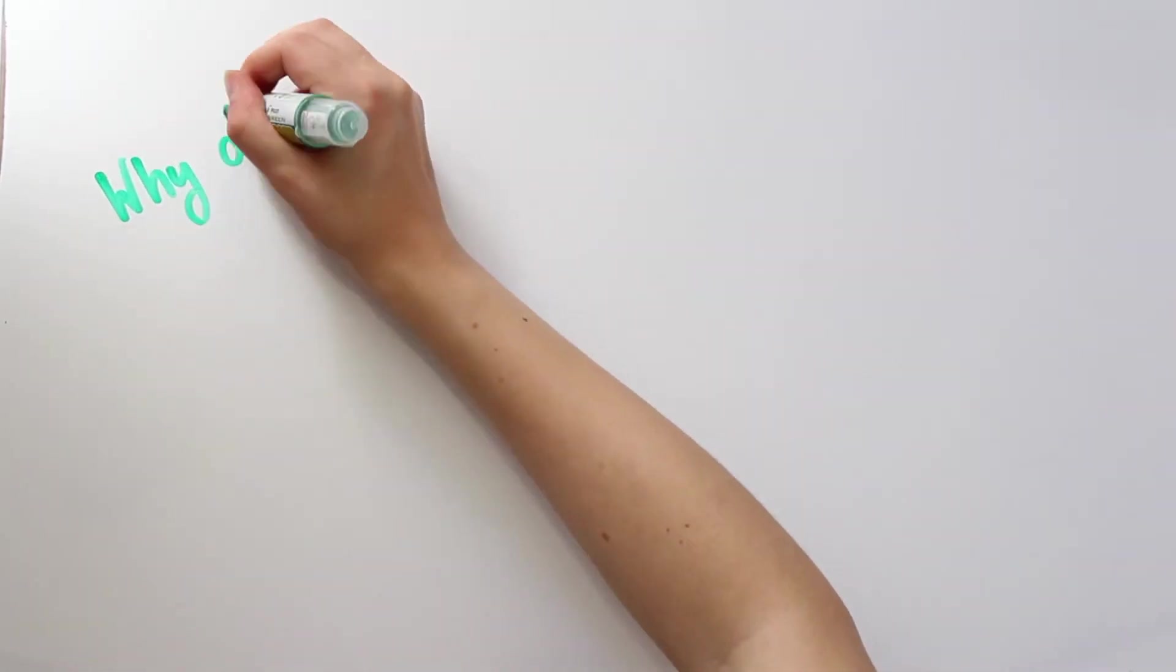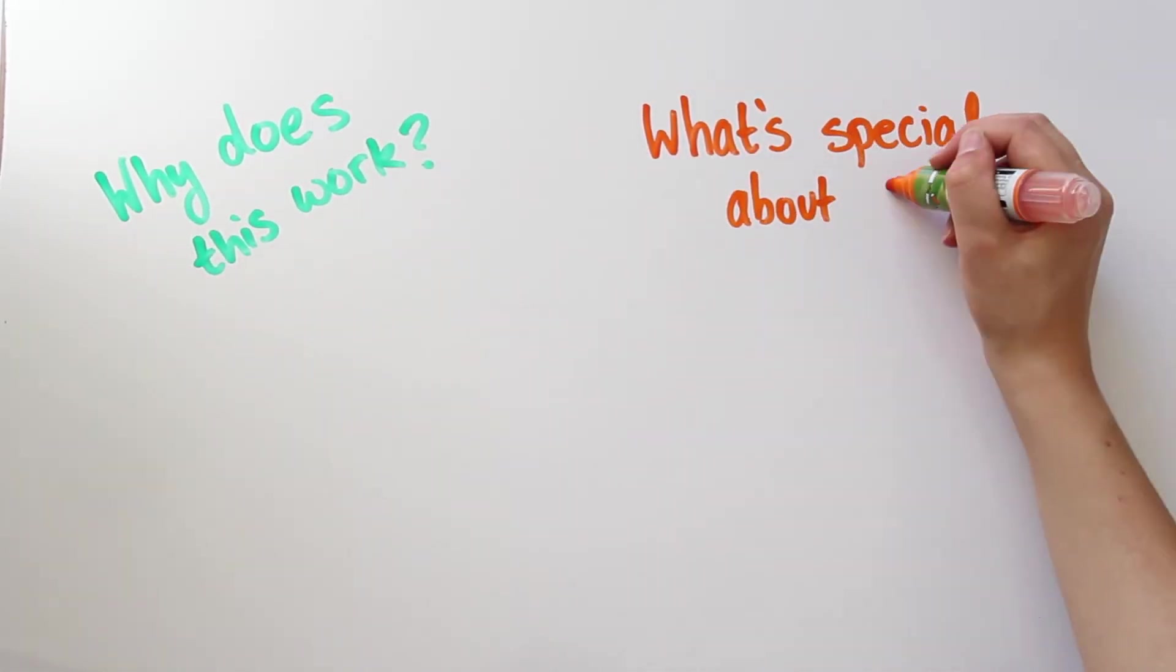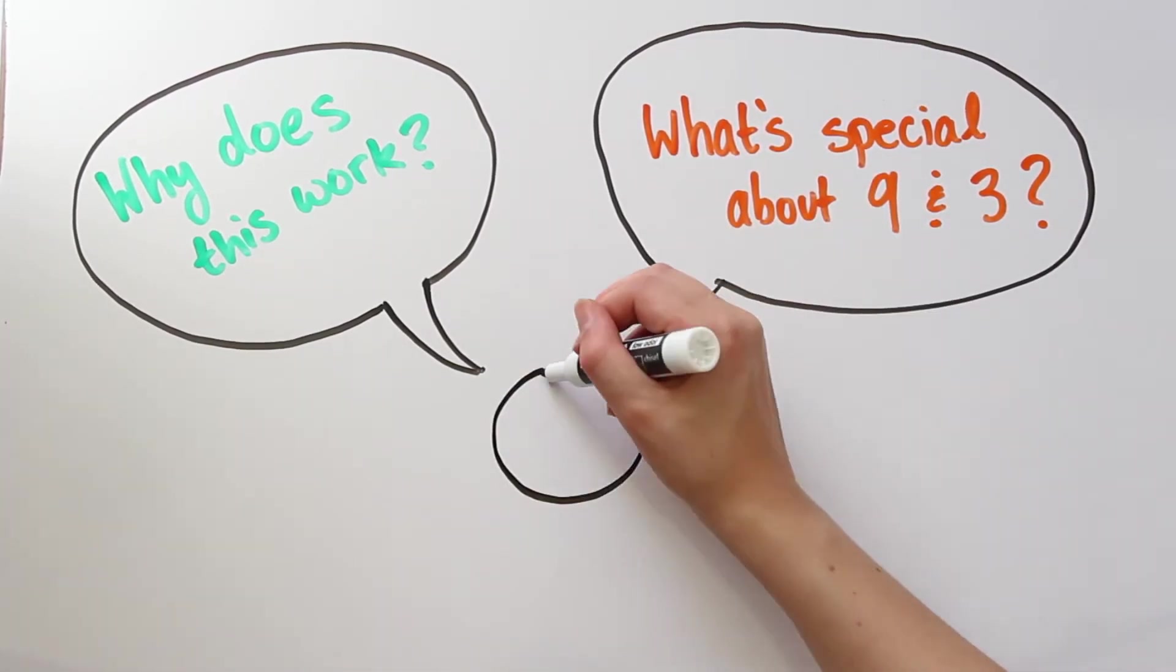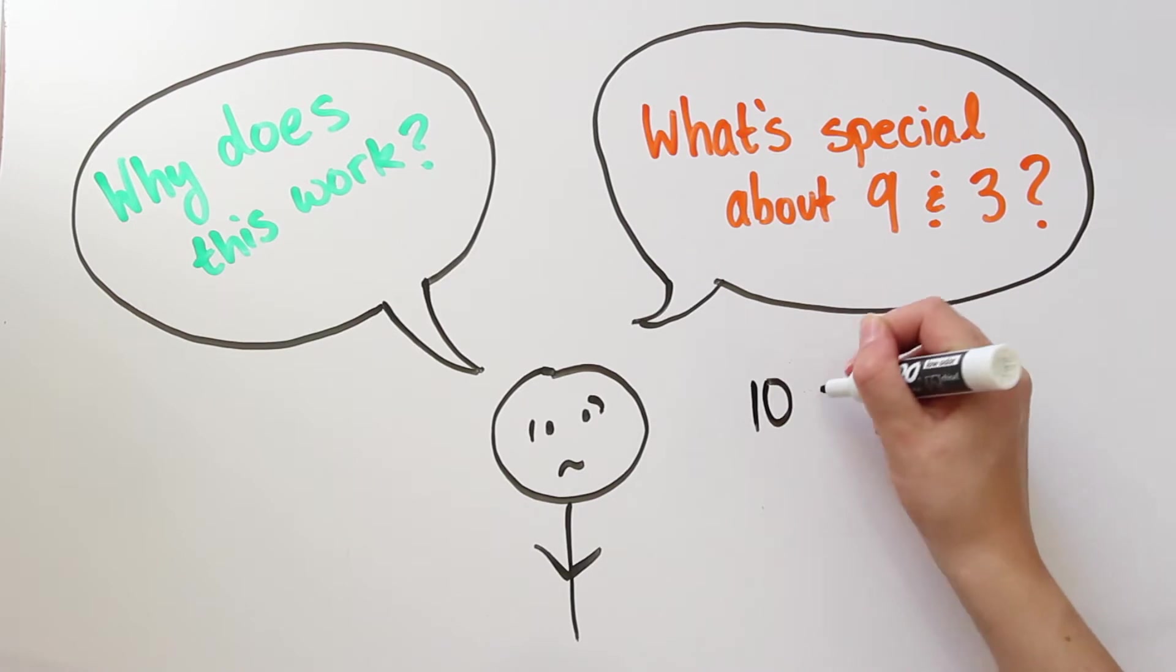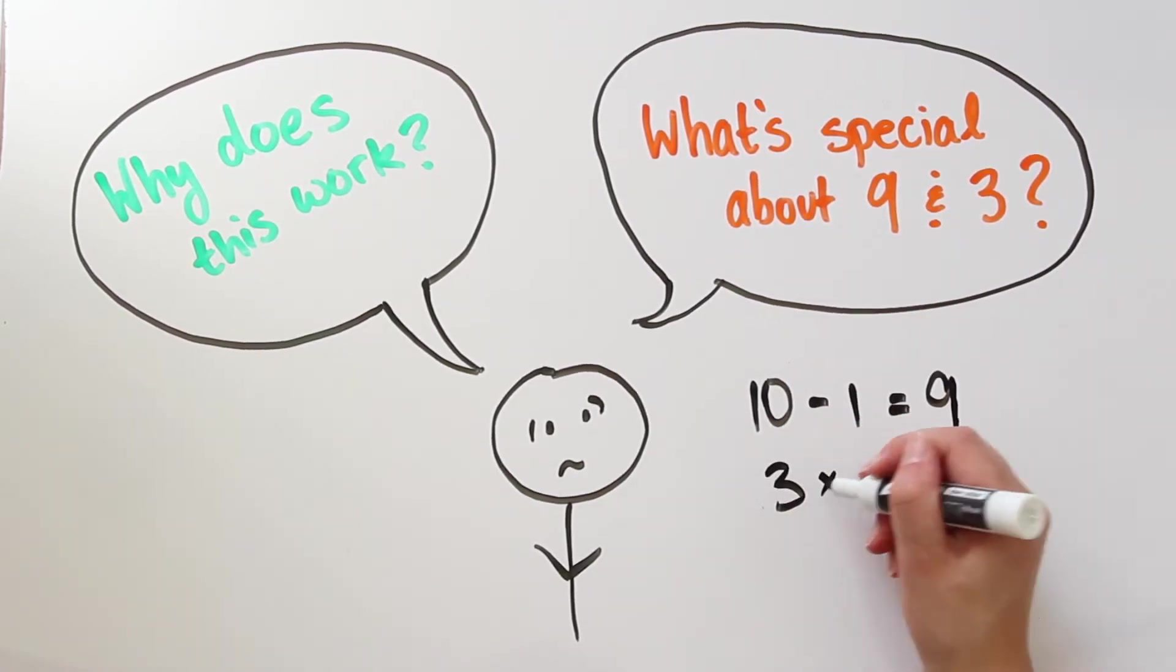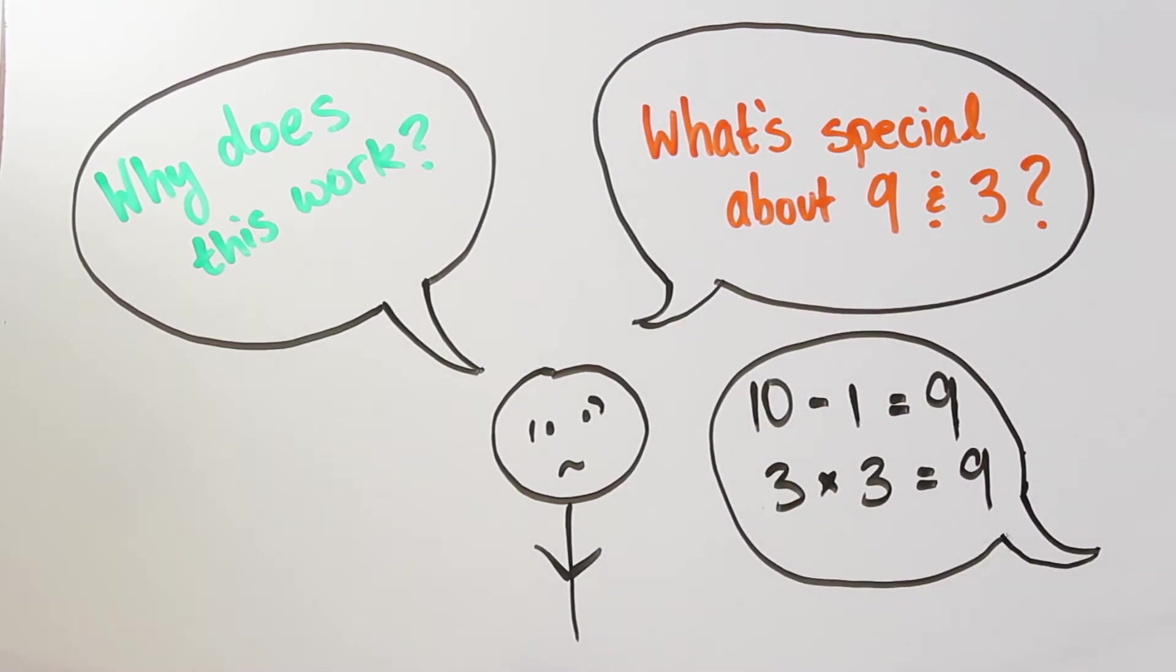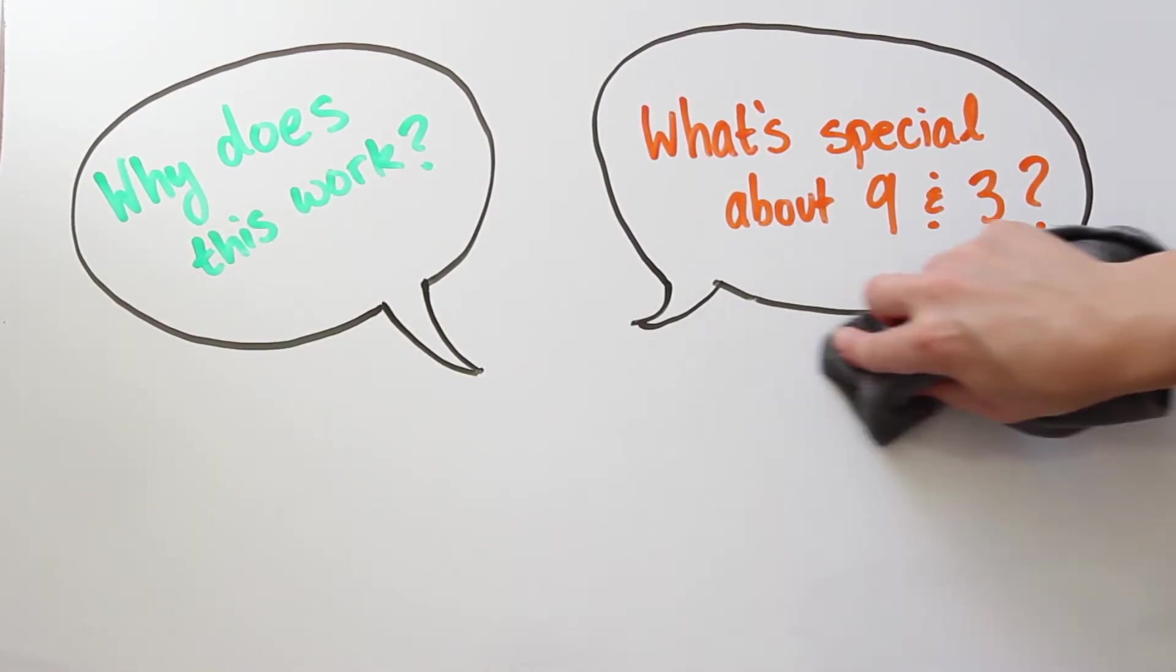You may still have some questions. Sure, we proved the 9's trick works, but why does it work? What's special about the numbers 9 and 3? The short answer is that 9 is 1 less than 10, and 3 is a factor of 9. But there wouldn't be 9 more minutes left in this video if that was the end of the discussion. To really understand why the 9's trick works, we need to think about the characteristic of the numbers that we are using.